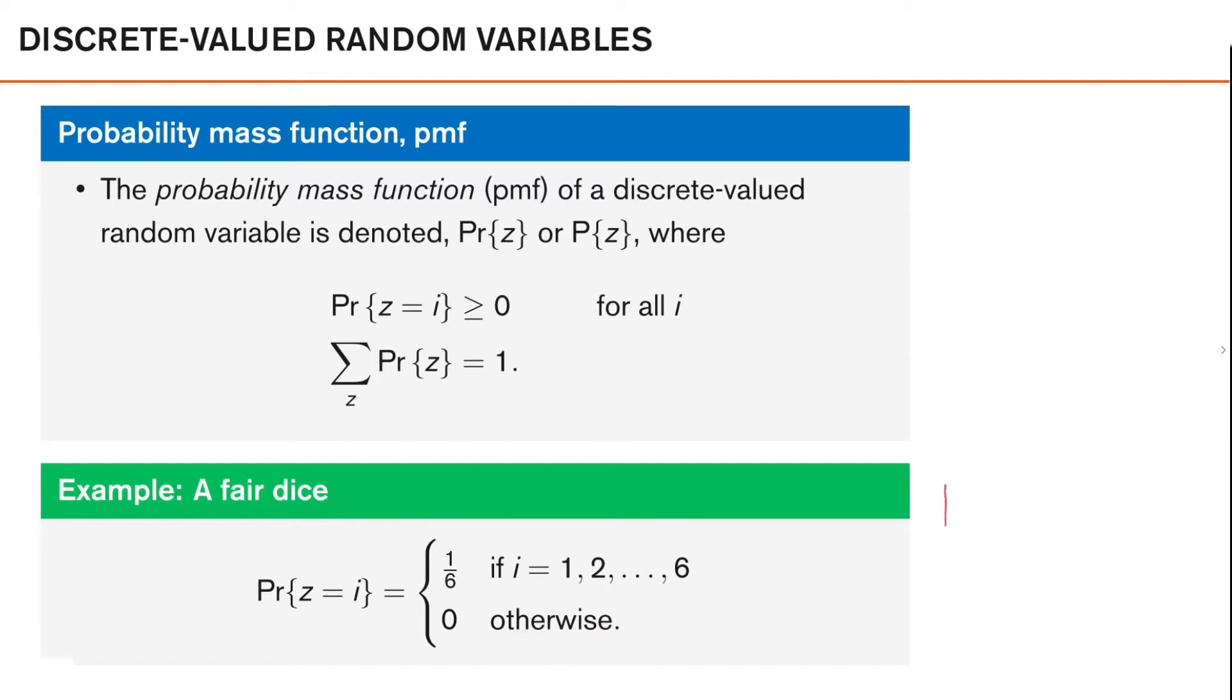If we visualize this PMF, it will look something like this, where we only have probability mass for discrete values.